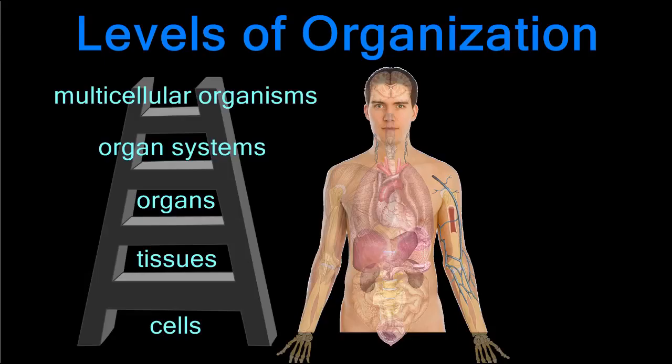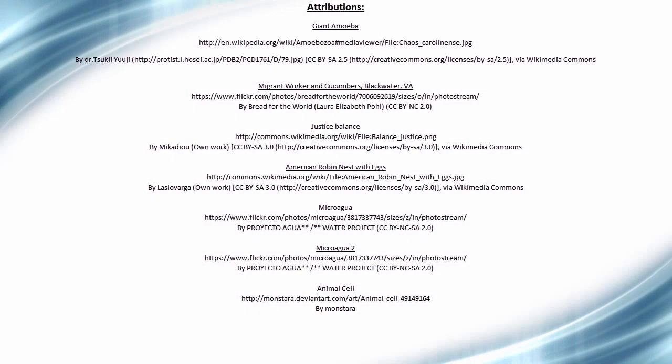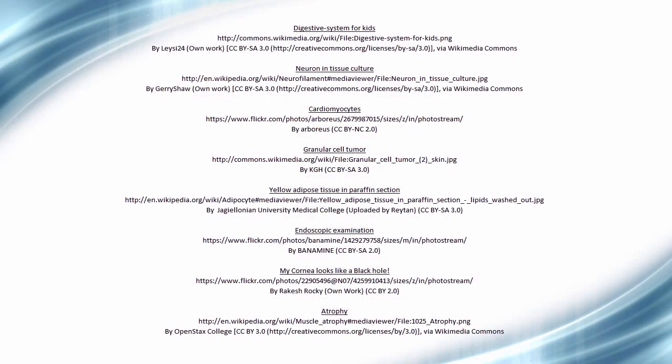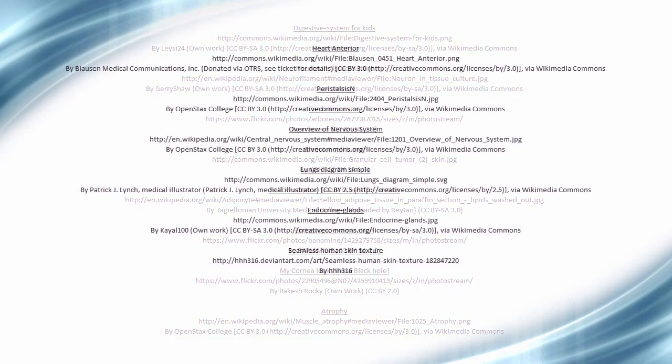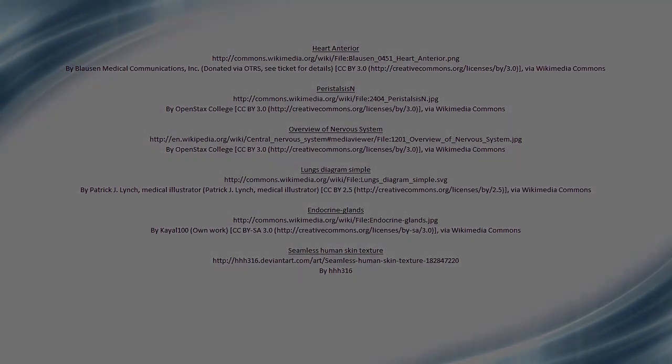Those organ systems and many others come together to form an entire multicellular organism, like a human being. It's amazing to think that a human being has trillions of cells working together to accomplish the tasks necessary for survival, while unicellular organisms, like this paramecium, are capable of doing that with just one single cell. It's truly a jack-of-all-trades.